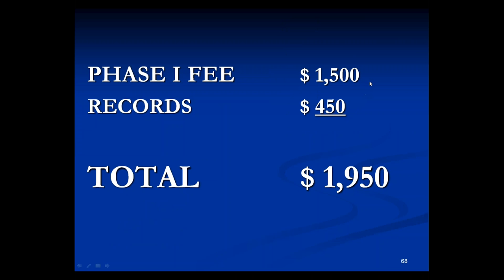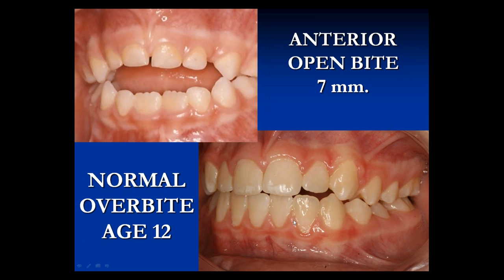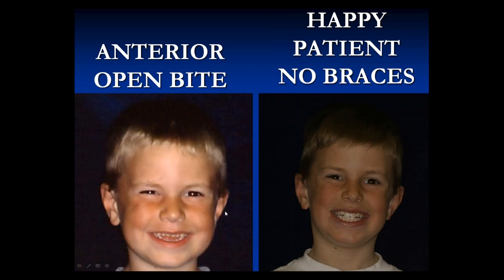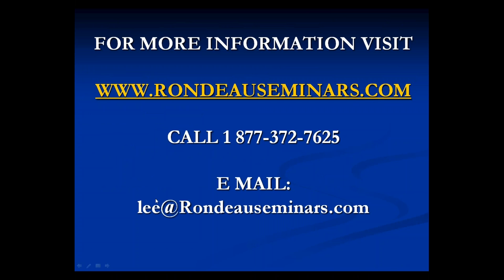He had an open bite of seven millimeters and after about six months the bite closed. He's five years old at the start, about seven years old when we finish, then we just wait until all the permanent teeth erupt. I charged $450 for records and $1,500 for phase one — just one appliance. Here he is at 12 with the bite closed. His mother asked if he needed braces — he looked pretty good. There was just one tooth slightly off, but the mother said they didn't have much money and they left it. He saved a lot of money — $1,950 and no braces. You can tell patients: sometimes if you do phase one, they won't need phase two.